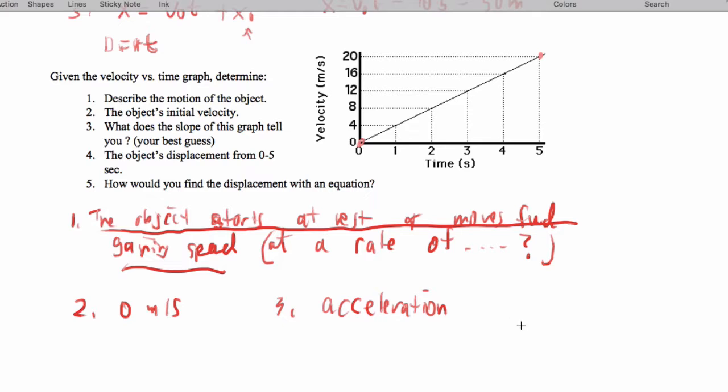And we're actually going to calculate it. So that's going to end up being 20 minus 0 over 5 minus 0, which is 4. And the units are meters per second squared.